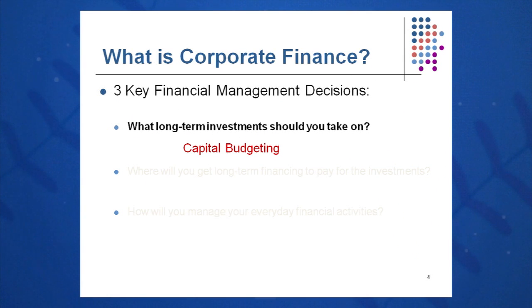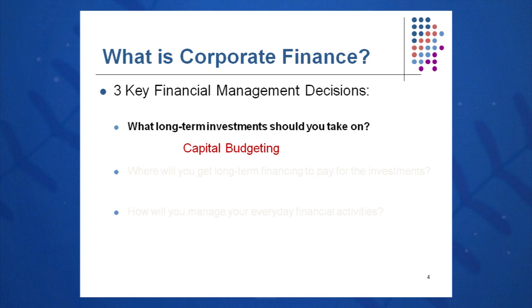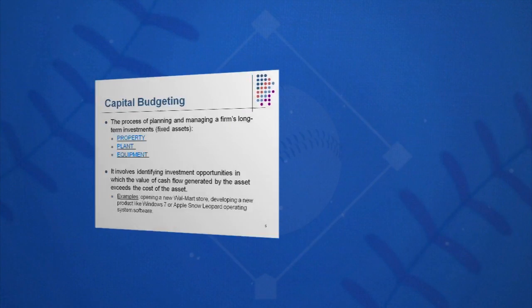So today, what is corporate finance exactly? What are the things on the mind of the chief financial officer and president of the company at all times? Number one, what long-term investments should we take on? For instance, at Walmart, this might be opening a new store or a Sam's Club. This falls under the category of capital budgeting — when you hear that term, we're talking about property, plant, and equipment. With a software company like Microsoft or Apple, I might be talking about developing a new operating system like Windows 7 or, in Apple's case, Snow Leopard. These are questions on the CFO's mind every day.